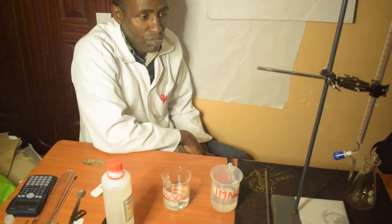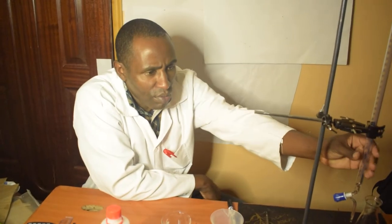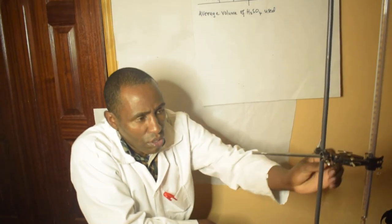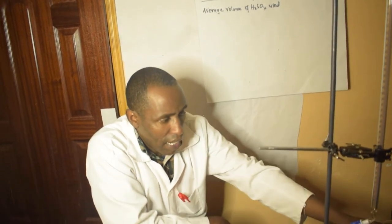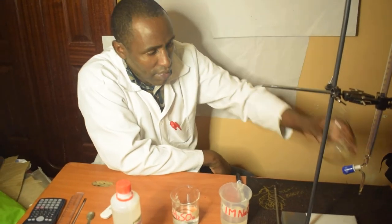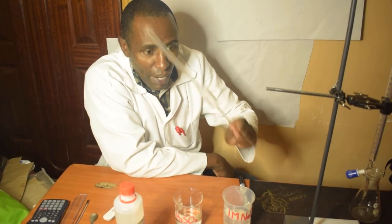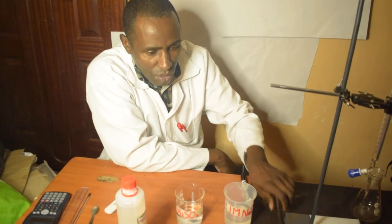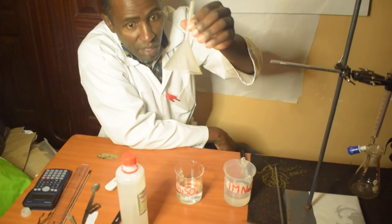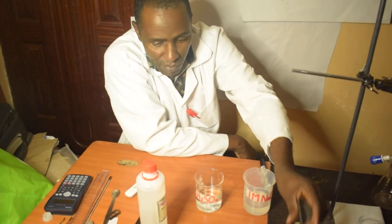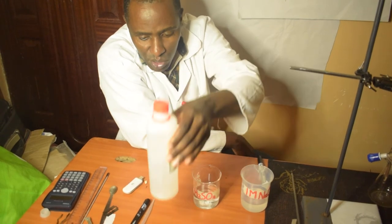With me here I'm going to have a burette, a retort stand, a conical flask, a pipette, and a funnel that I'll use to fill my burette. And of course I'm going to have an indicator which shows the end point of the reaction.